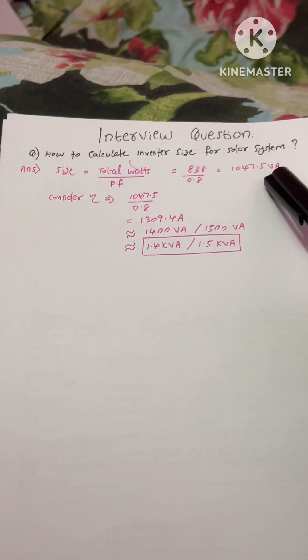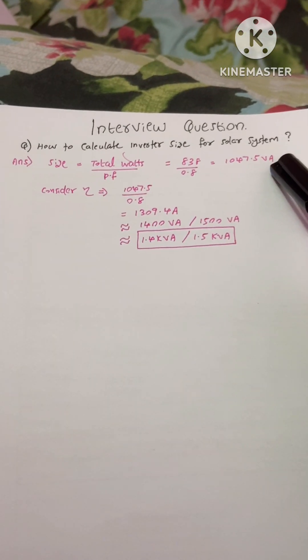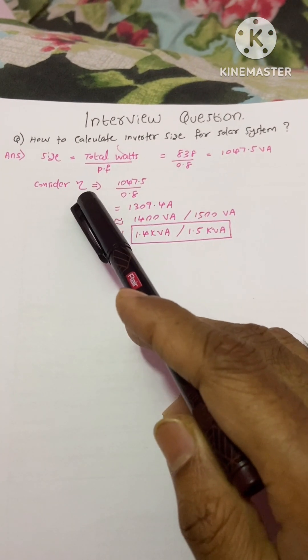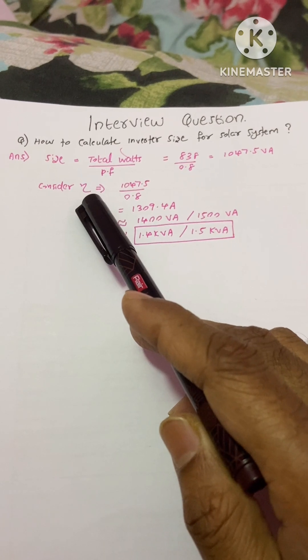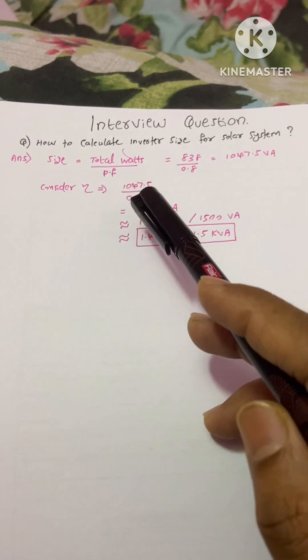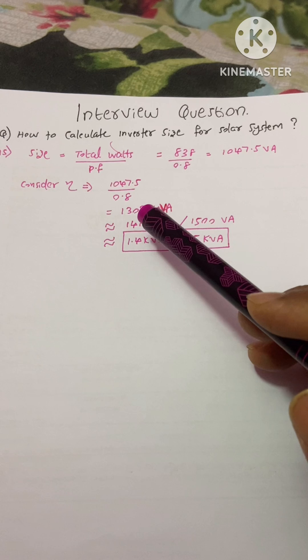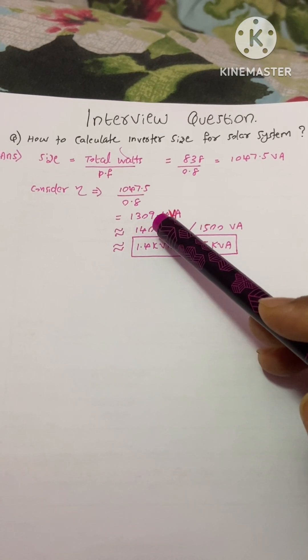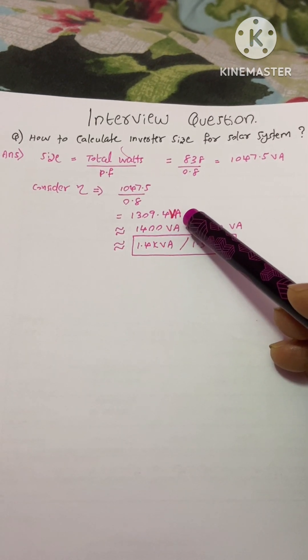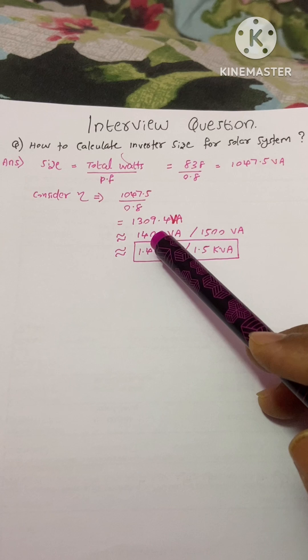Now we need to consider the efficiency of the inverter. I have taken 80% efficiency. We got the answer: 1309.4 VA. The next available size of the inverter is 1400 VA, or we can take 1500 VA.